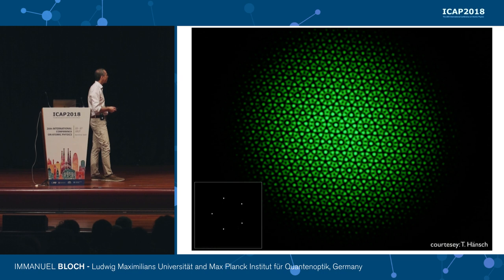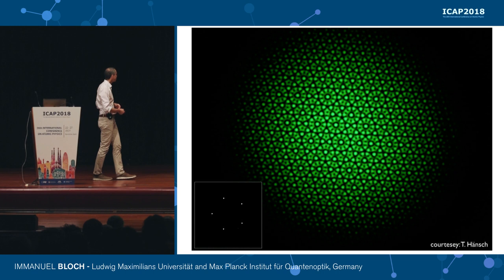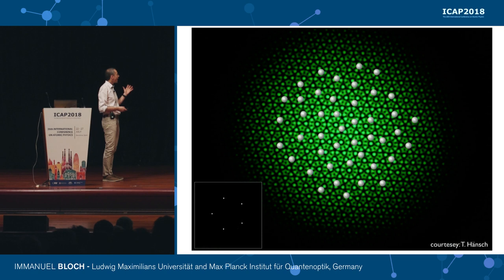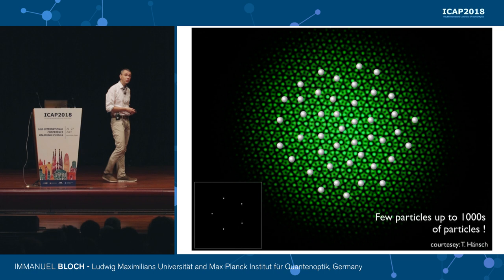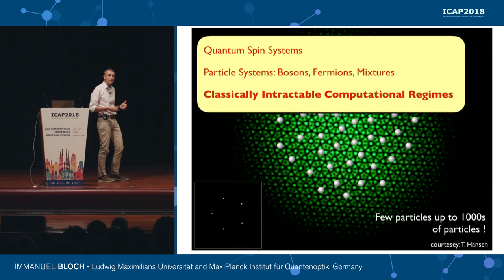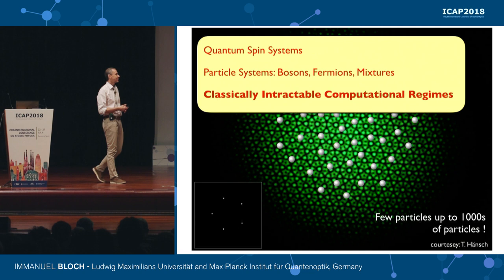Let me set the stage for the system we're working in. This is a beautiful picture from Ted Hänsch — you might have received it on your Christmas cards. We use the interference of laser beams to load ultracold atoms into crystals of light to study their behavior. We can do this with a few hundreds up to a few thousands of particles in quantum gas microscope experiments, studying bosonic or fermionic particle systems and directly accessing material science properties.